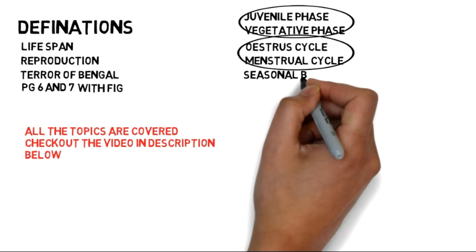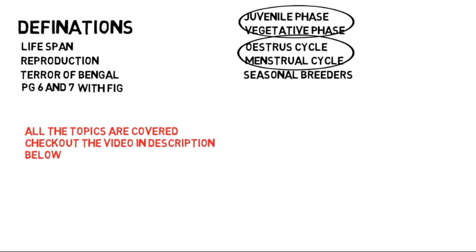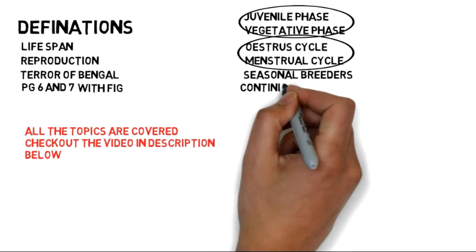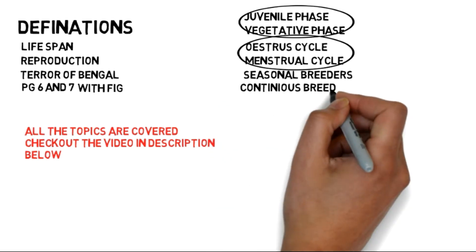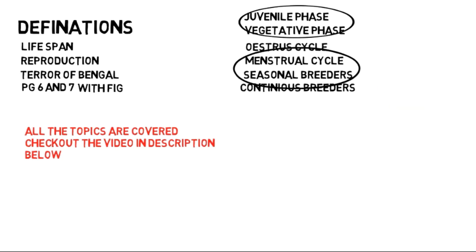Seasonal and continuous breeders: some organisms can reproduce only in certain seasons, while continuous breeders are those which can reproduce throughout the year.